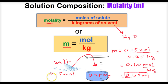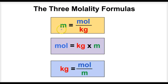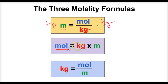So let's take a look at the three formulas we can come up with by manipulating the variables in the molality equation. We know that molality equals moles of solute divided by kilograms of solvent. But if we're asked to solve for moles of solute, we multiply both sides by kilograms — they cancel out — and we get: moles of solute equals kilograms of solvent times molality.